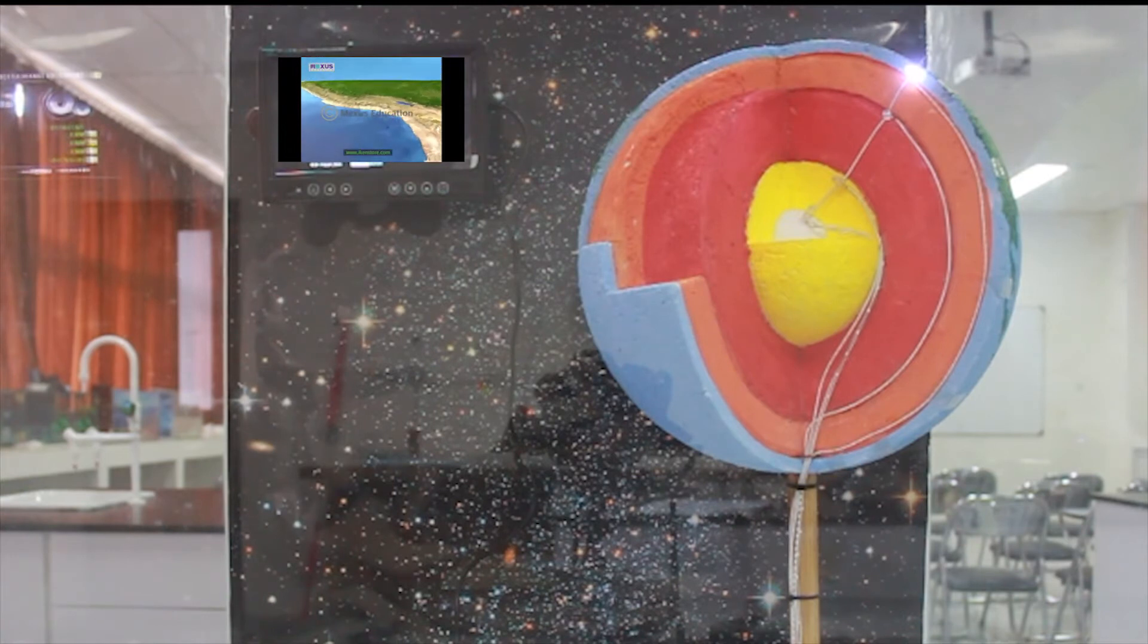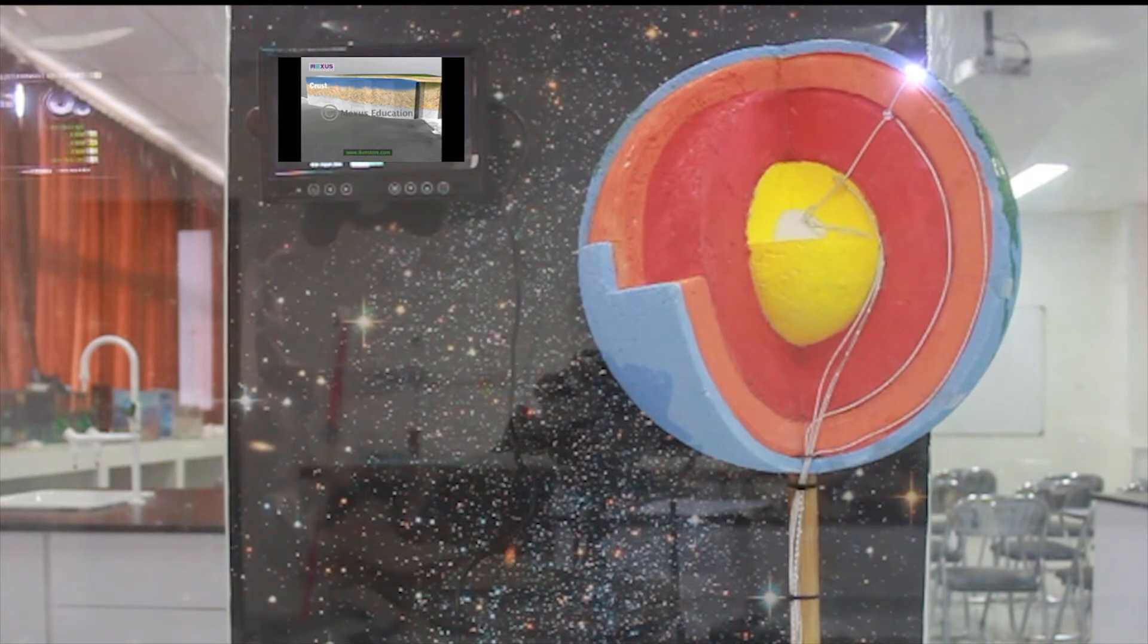In reality, the crust of the Earth is a very thin layer. It is only 50 kilometers deep. The crust floats on top of the outer layer of the Earth. The oceanic crust is thinner than the continental crust.